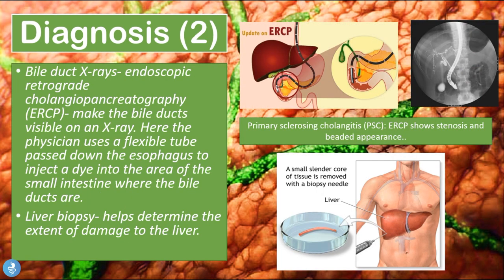Another diagnostic option is the bile duct x-ray called endoscopic retrograde cholangiopancreatography, or ERCP, which makes the bile ducts visible on an x-ray. The physician uses a flexible tube passed down into the esophagus to inject a dye into the area of the small intestine where the bile ducts are — specifically at the ampulla of Vater where the bile duct enters the small intestine. The dye stains the biliary system; if the channels are clean and smooth there is no PSC, but if there are multiple spots of narrowing and inflamed parts then PSC can be diagnosed. In this ERCP case we can see stenosis and a beaded appearance.